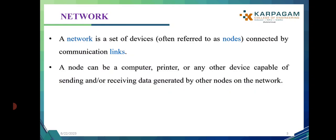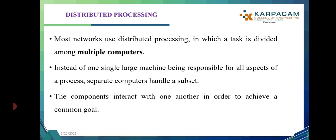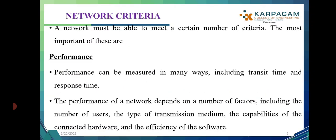A network must meet certain criteria in order to perform data communication. The most important are performance, reliability, and security. Performance can be measured in many ways — one way is by measuring the transit time and the response time. Performance also depends on factors including the number of users, the type of transmission medium, the capability of the connected hardware, and the efficiency of the software.